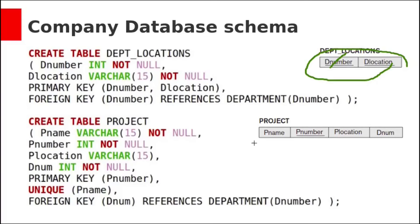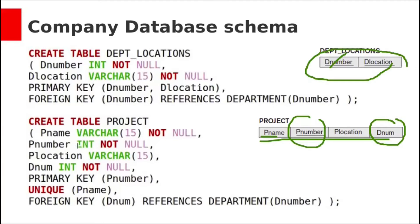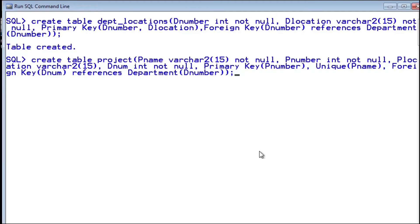Next, the project table. This table has four columns: pName, pNumber, pLocation, and dNumber. pNumber is the primary key. pName should be unique, as it was also a key attribute. dNumber is the foreign key. pName is varchar2 not null, pNumber is integer not null, pLocation varchar2, and dNum is integer not null. Primary key is pNumber. Unique constraint is added for pName. dNumber is the foreign key coming from the department table. Let's create this project table. Table created.